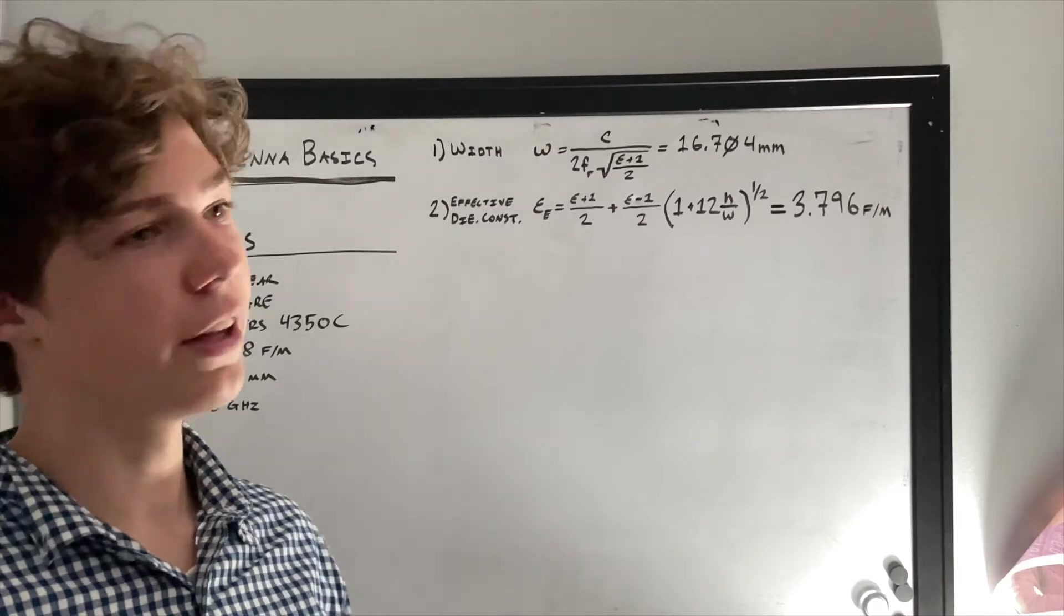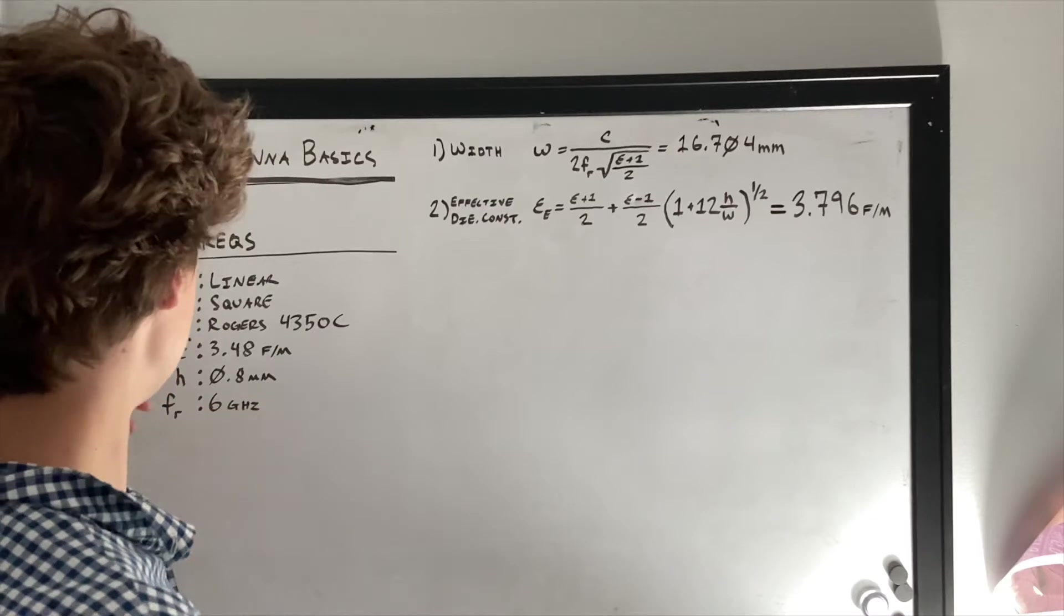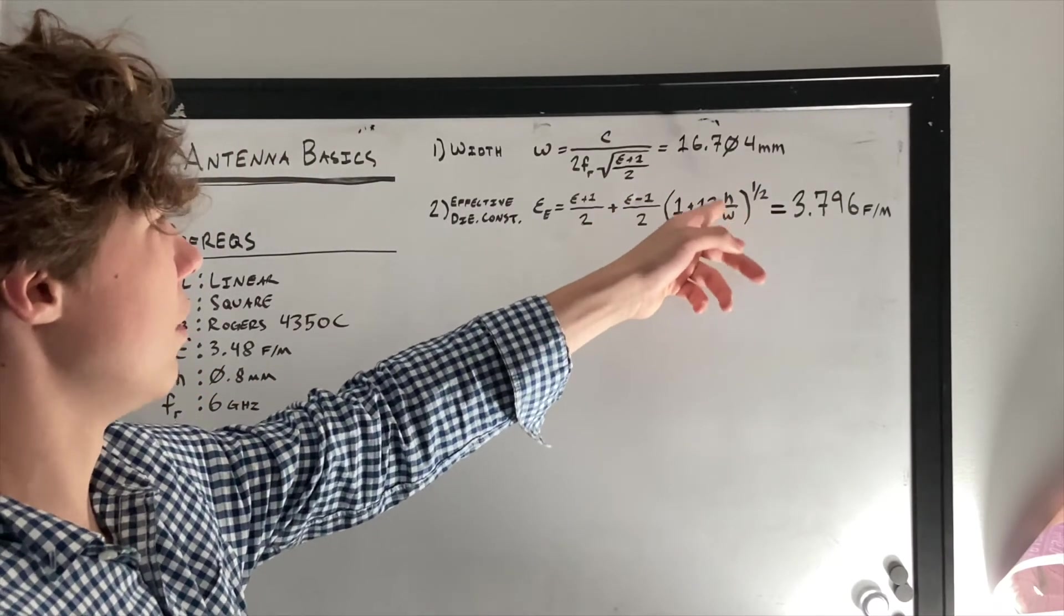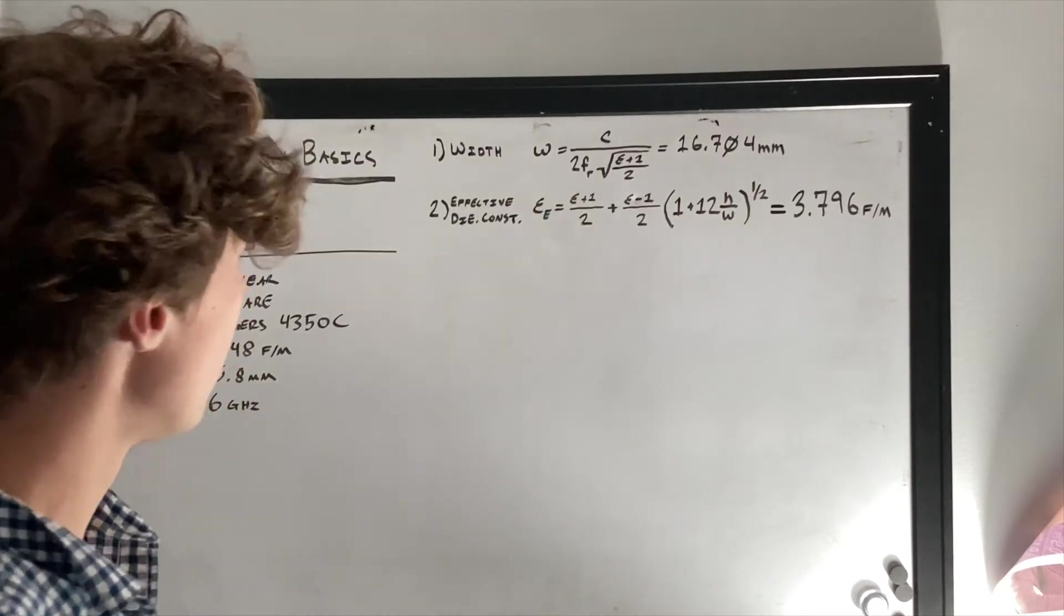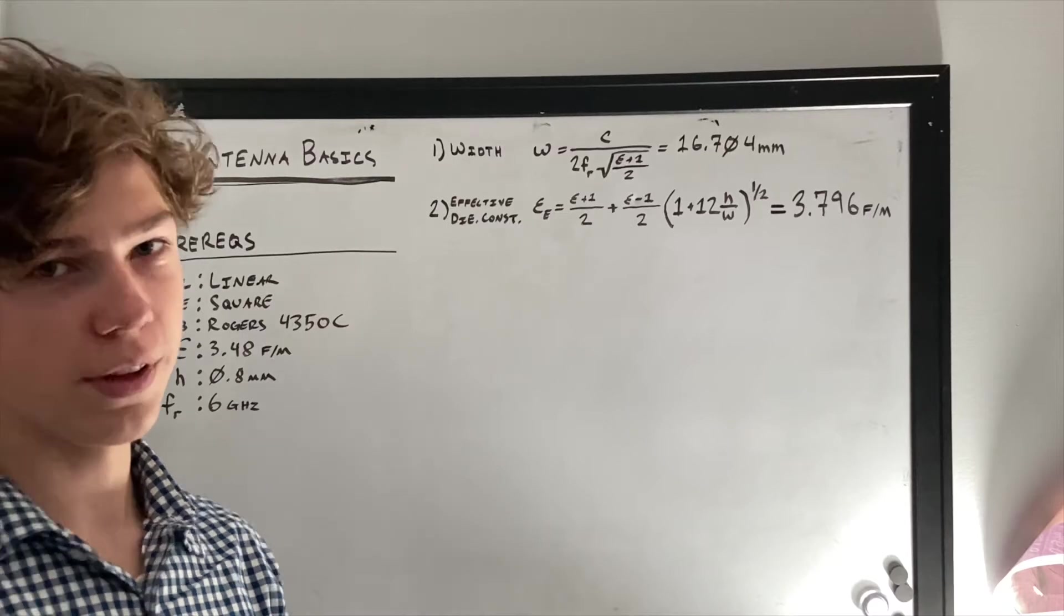And if your height is in millimeters, such as ours, it's 0.8 millimeters, you'll have to convert this to millimeters so that these are the same unit. Now we're going to go ahead and move on to calculating our length, ground plane, and stuff like that.